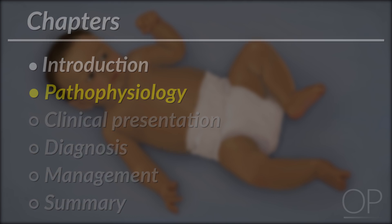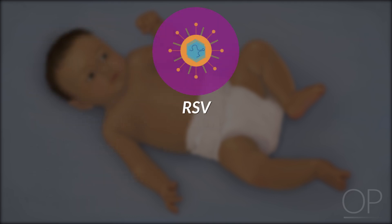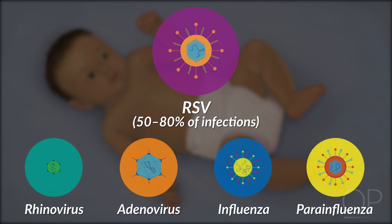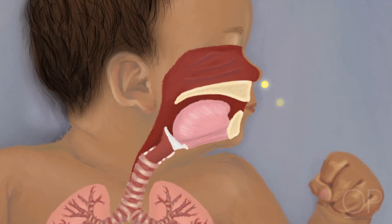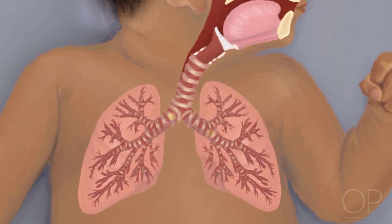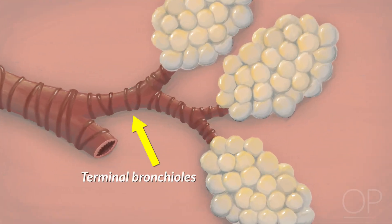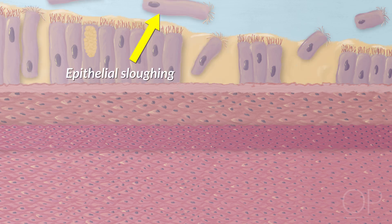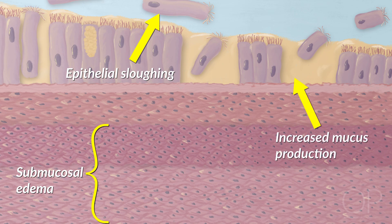Pathophysiology. While RSV is the classic cause of bronchiolitis and responsible for 50-80% of infections, many other viruses can cause similar symptoms, including rhinovirus, adenovirus, influenza virus, and parainfluenza virus. After initially infecting the upper respiratory tract, the virus moves down to the terminal bronchiolar epithelial cells, where the infection and subsequent inflammatory reaction in the small bronchi and bronchioles result in epithelial sloughing, submucosal edema, and increased mucus production.